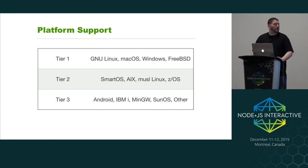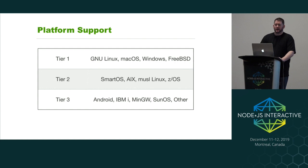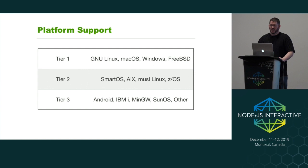Tier three is community-maintained platforms: Android, IBM, and others that are in the process of trying to add higher-tier support. A lot of times people will show up with platforms I've never even heard of and start trying to add if defs into the code. As long as it's not too intrusive, we're usually okay with that, but we can't make any promises it won't break since we're not testing it anywhere.